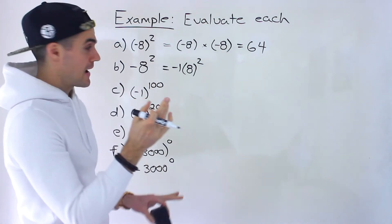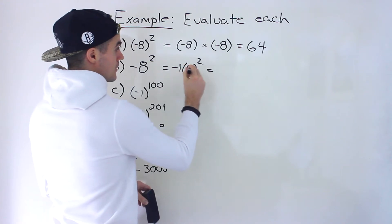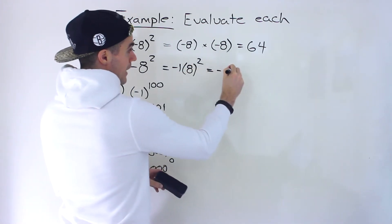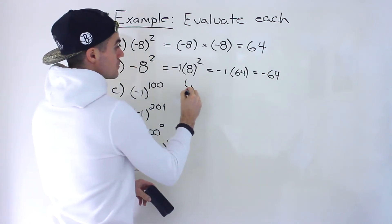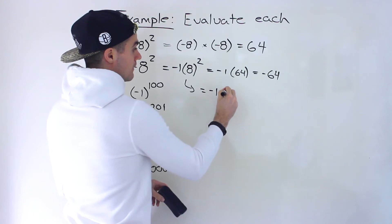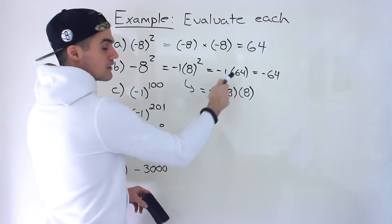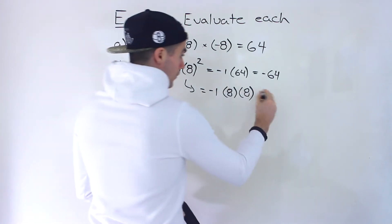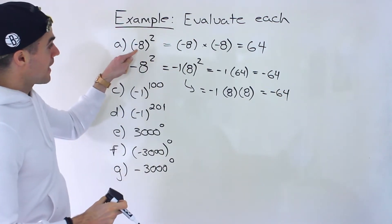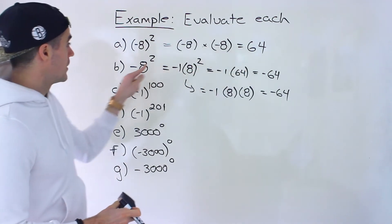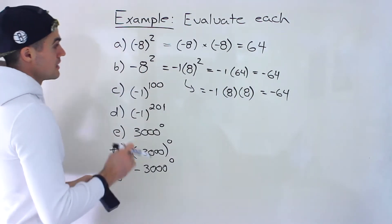So if we follow BEDMAS, we have to work with exponents before multiplication. We would have negative 1 times 8 to the power of 2. So 8 to the power of 2 gives you positive 64, and then negative 1 times 64 gives you negative 64. Another way to show this: expanding gives us negative 1 times 8 times 8, which is negative 64. So notice — when negative 8 is in brackets, we get positive 64, but without brackets, we get negative 64. Just be careful — these are common scenarios.